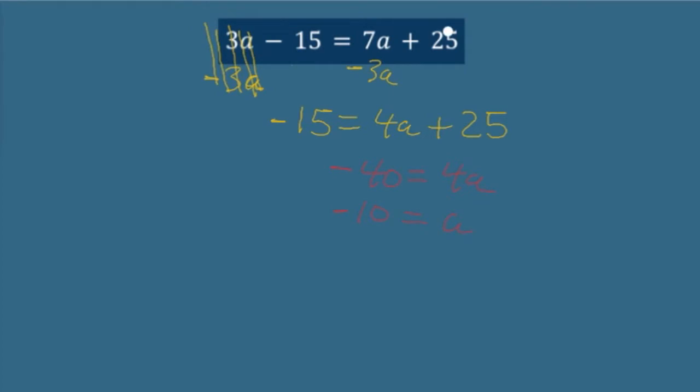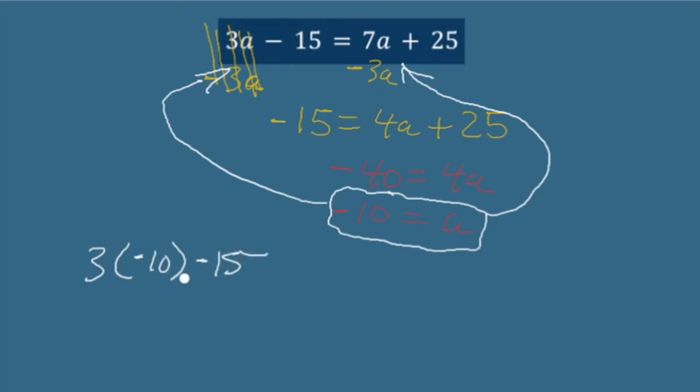If you want to check your answer for an equation with variables on both sides, it's a little different from checking your answer for other kinds of equations. What you'll need to do is take your answer and insert it into the original on each side separately, and just see if that makes your sides match. For example, three times negative 10 minus 15, what does that equal? And then check seven times negative 10 plus 25. What does that equal? Do they match? Is this situation up here balanced when a is negative 10?